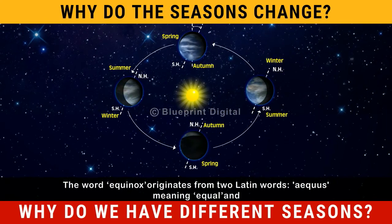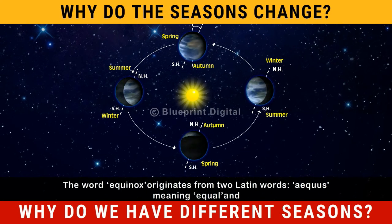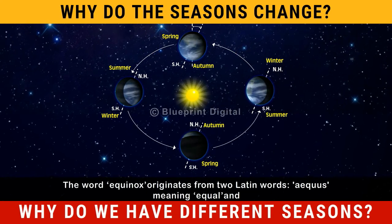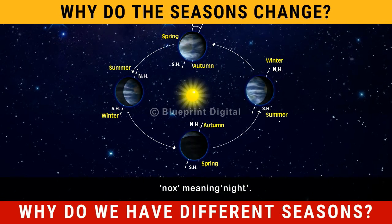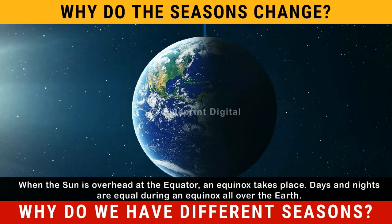The word equinox originates from two Latin words: equus meaning equal and nox meaning night. When the Sun is overhead at the equator, an equinox takes place. Days and nights are equal during an equinox, all over the Earth.